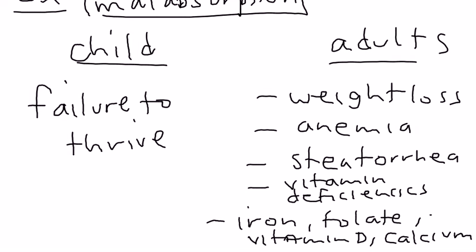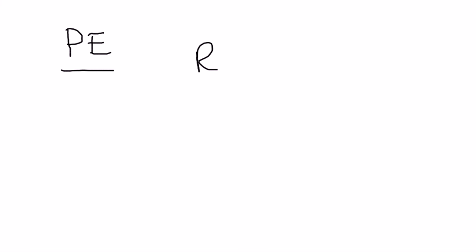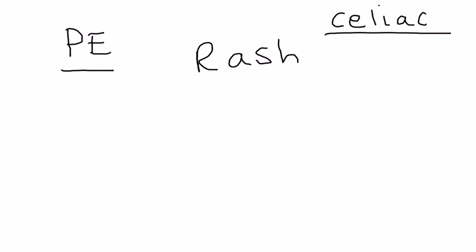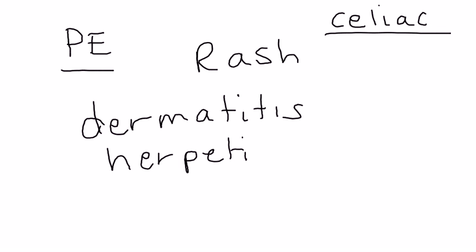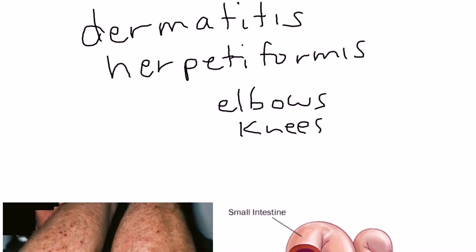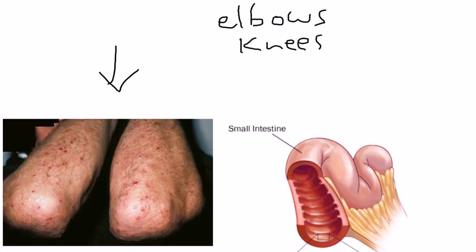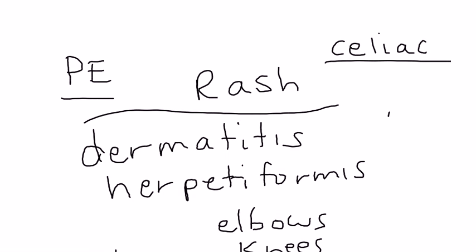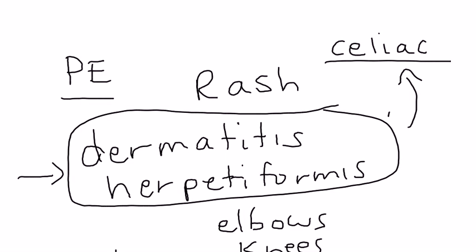Other than those symptoms, there's one characteristic physical exam finding that is tested a lot on licensing exams: a rash associated with celiac disease. That rash is called dermatitis herpetiformis. It is a very itchy, pruritic, vesicular rash that can appear on the elbows and knees. Here is a picture — this is a mild case. Sometimes they'll just show a picture of the rash and ask you what disease it is, so it's very important to associate this rash with celiac disease.